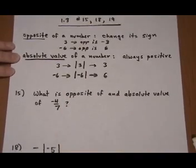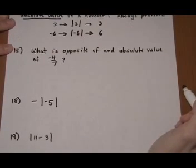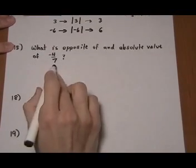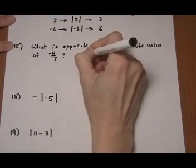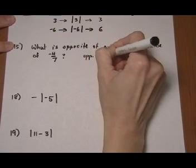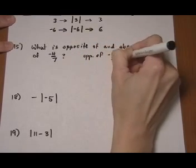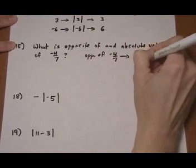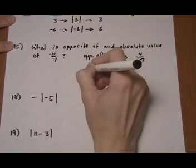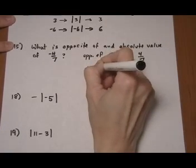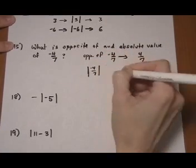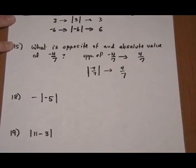So let's do a couple problems. Number 15, what's the opposite of and the absolute value of minus 4 over 7? The opposite of minus 4 over 7, change the sign, 4 sevenths. The absolute value of minus 4 sevenths, it has a negative in there, get rid of the negative, 4 sevenths.